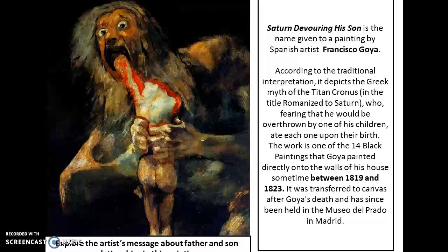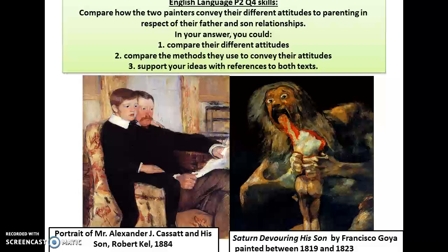I obviously want to develop your skills for AQA English exams, both for language and literature. Here's a quick English Language Paper 2 question for skill. Instead of writing paragraphs, just think in your mind the answers to these questions: compare how the two painters convey their different attitudes to parenting in respect of their father and son relationships. In your answer, you could compare their different attitudes, the methods they use to convey those attitudes, and support your ideas with references to both texts. This is a good question to do verbally with a friend or with a parent.